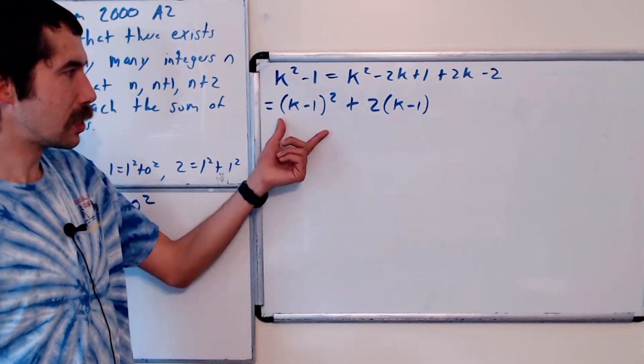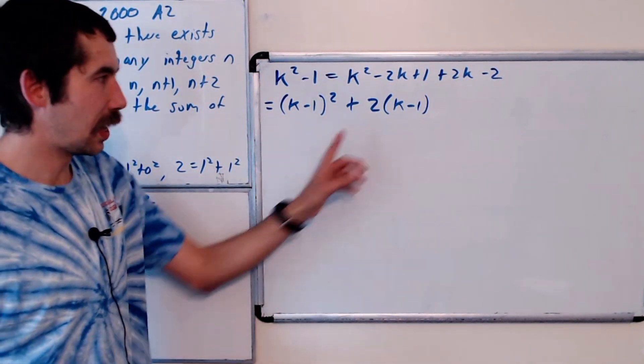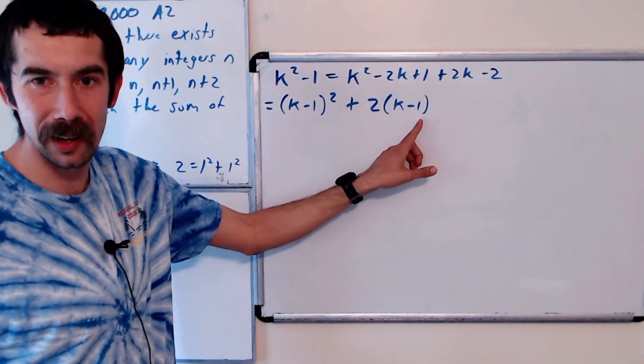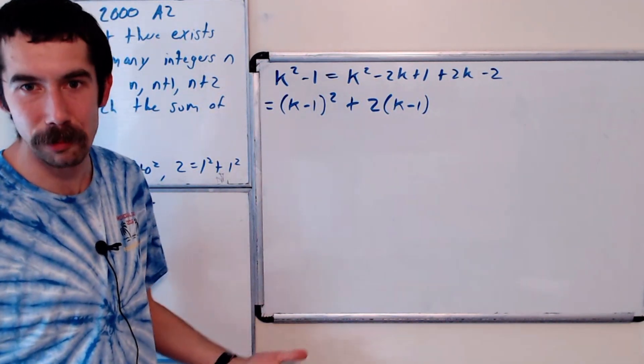And so this is already a perfect square. Now we want to figure out when is it that 2 times k minus 1 is a perfect square. And hopefully there's infinitely many times when that can happen.